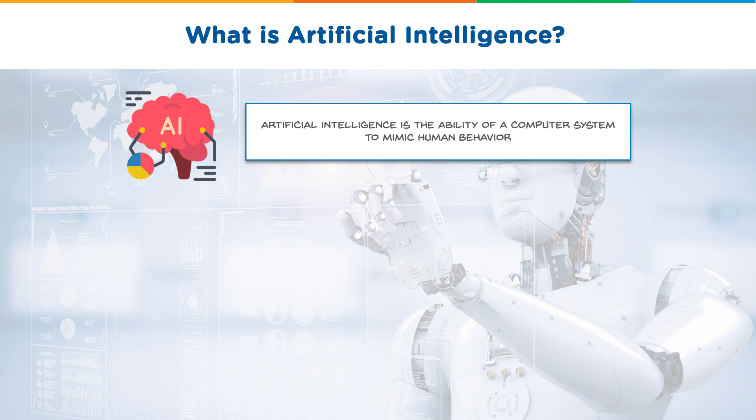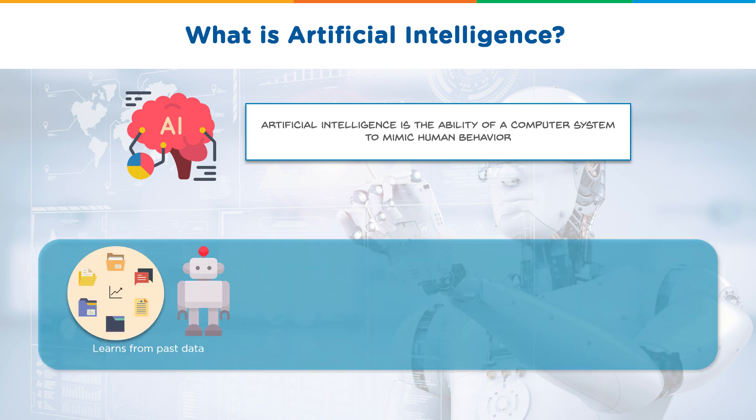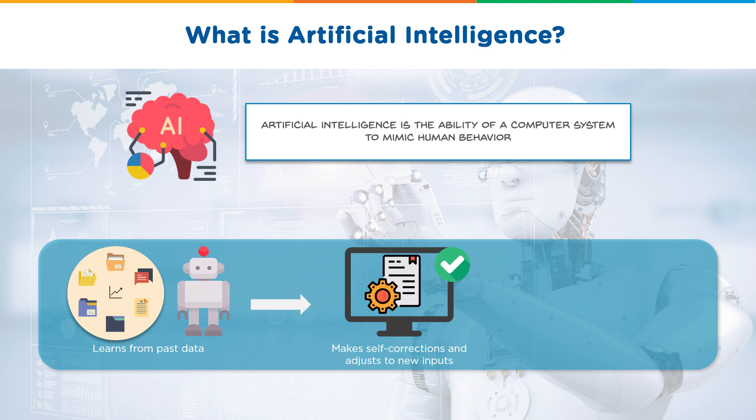So how does artificial intelligence work? Firstly, it learns from past data. Machines that are artificially intelligent learn from their actions, which are positive or negative. With this new information, the machine is able to make corrections to itself so that problems don't resurface, and make adjustments to handle new inputs. Finally, the machine is able to perform human-like tasks.